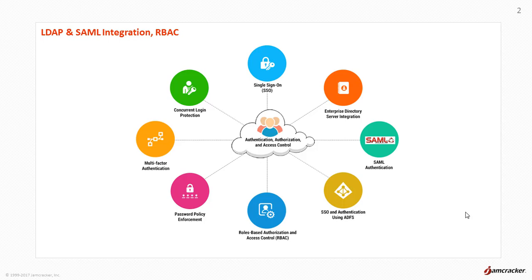The platform ensures authentication, authorization, and access control for enterprise users by integrating with an existing LDAP server, like Microsoft AD. This synchronizes organizations, users, and associated roles-related data from the respective directory servers. The platform is integrated with ADFS and authenticates users logging into JSDN from an external portal using SAML 2.0 to applications and services as supported, as well as role-based access control that manages multiple user roles and privileges across multiple cloud providers.